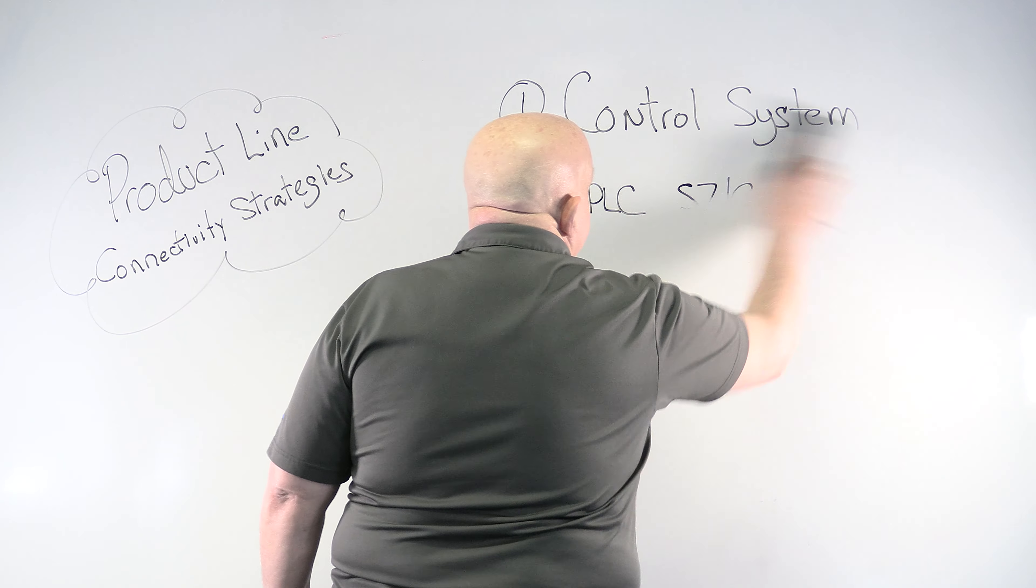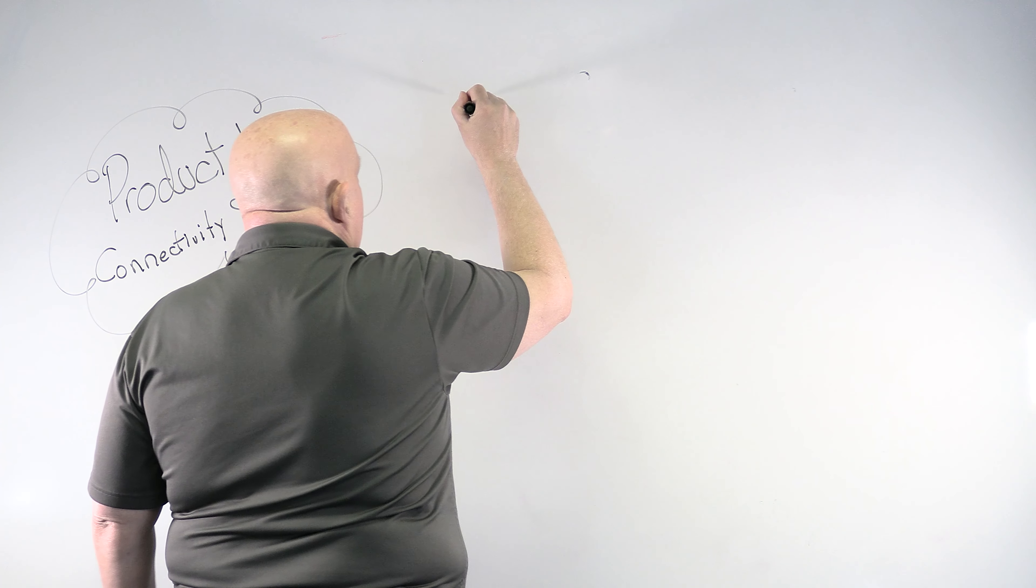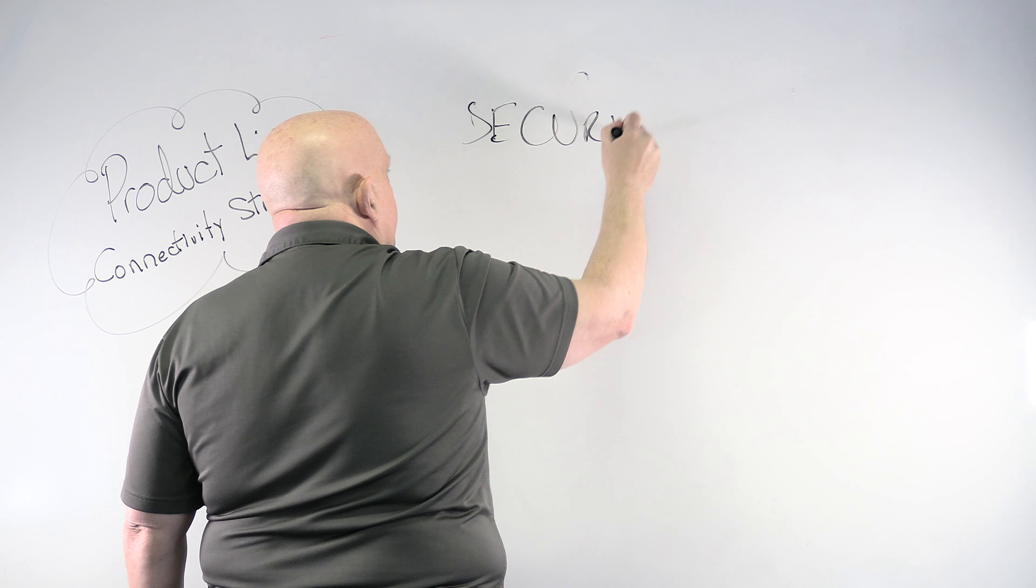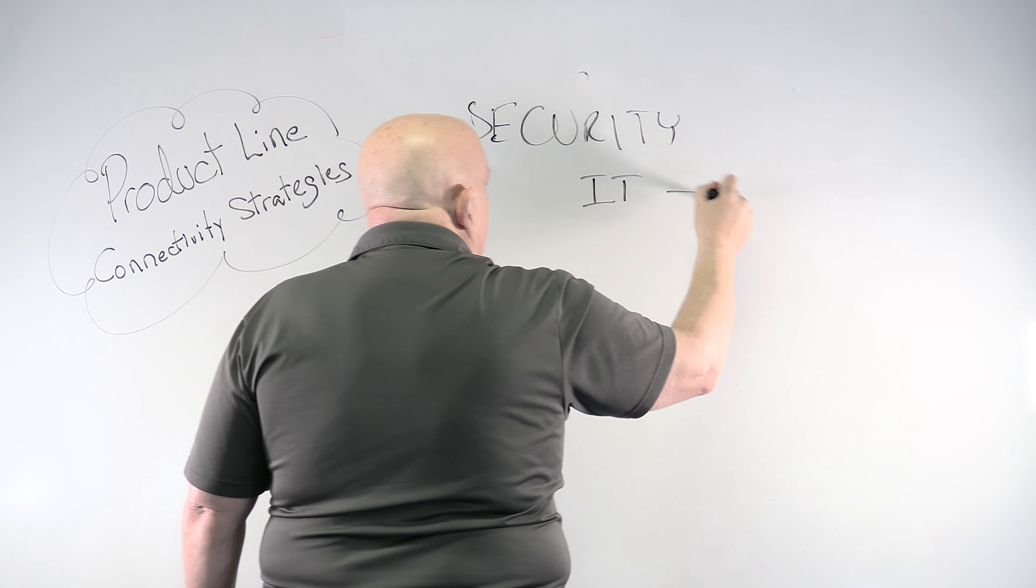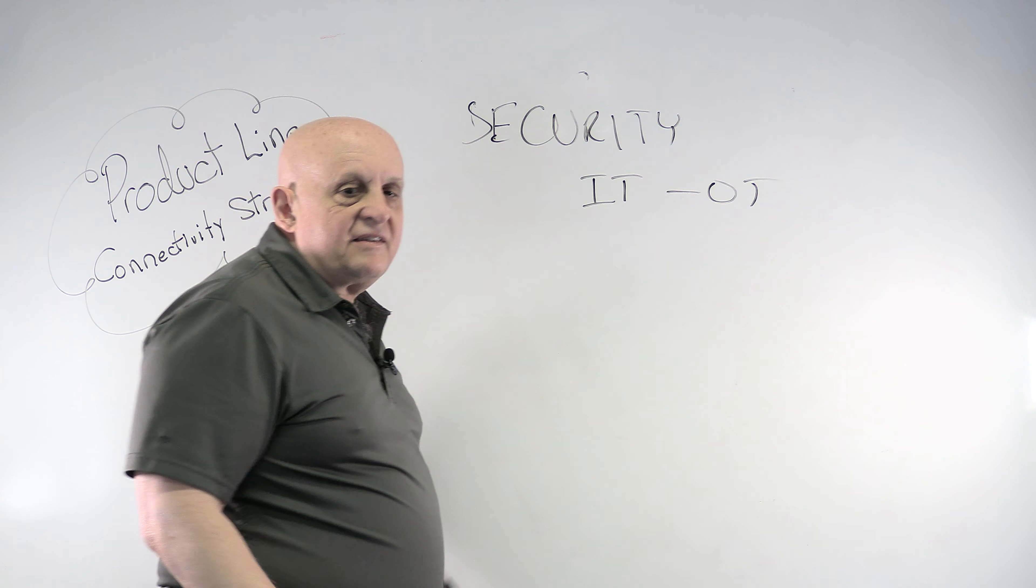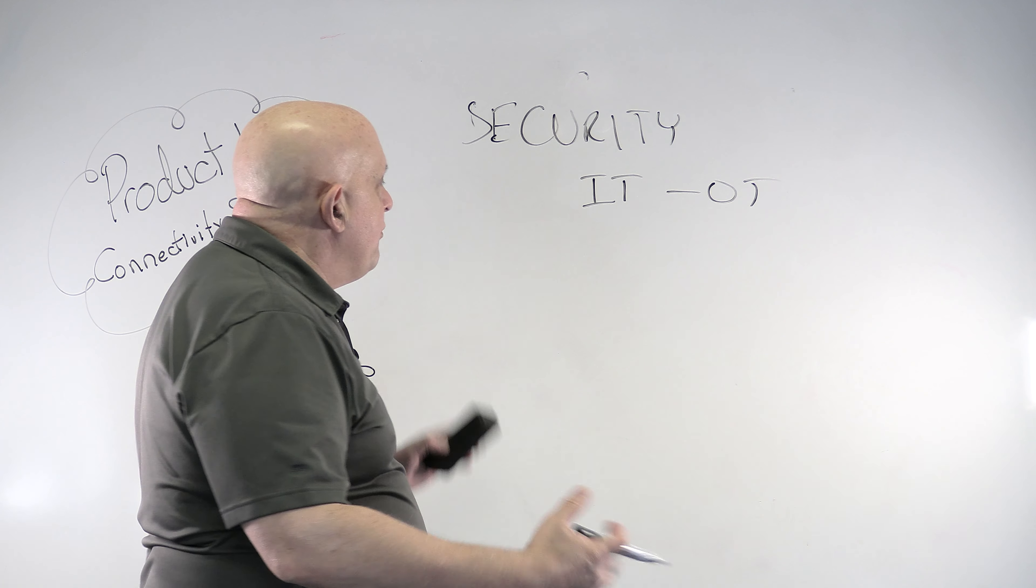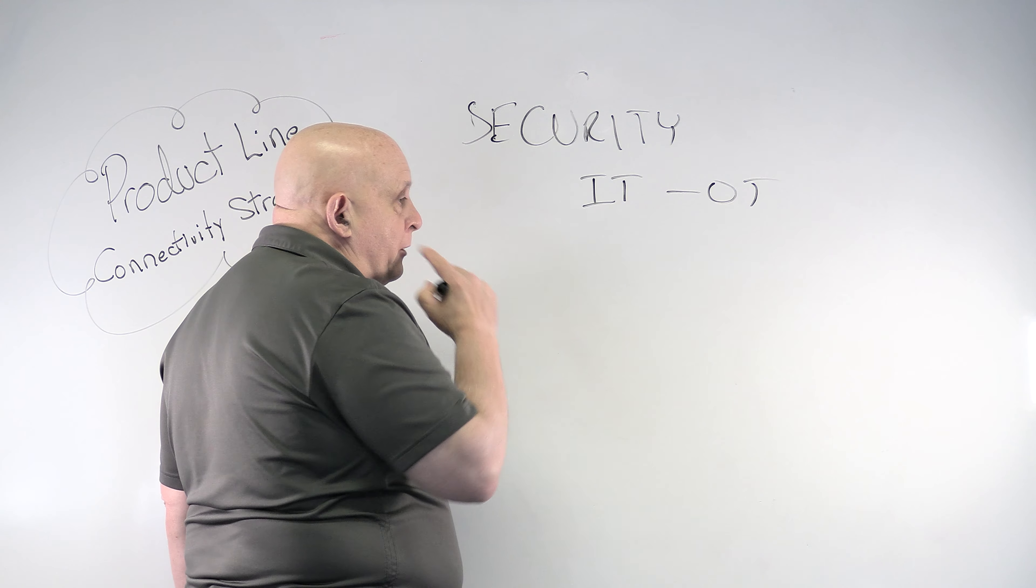So the third, that's essentially the third thing that we want to talk about is security. So the first rule of security is keep the IT and the OT separate. Do not mix them in the same computer so that they can both be, you can go from one to the, you can jump from one to the other.